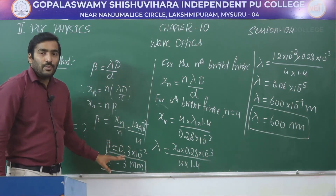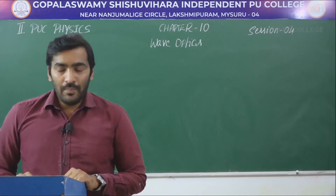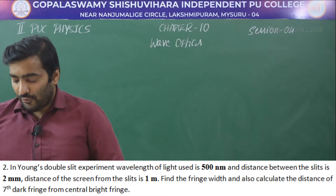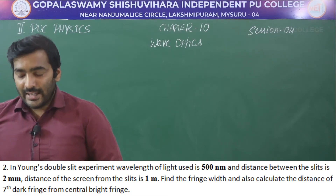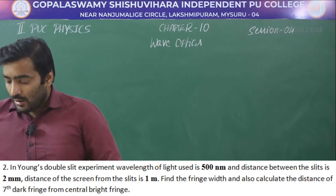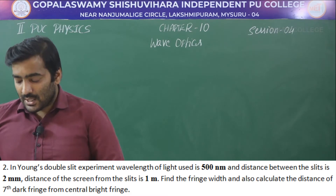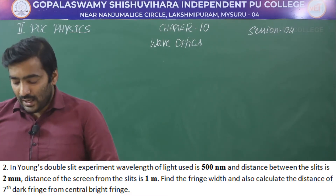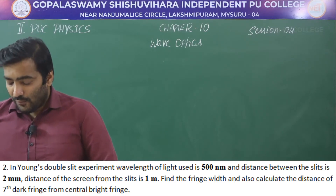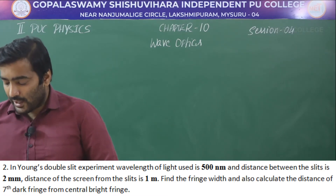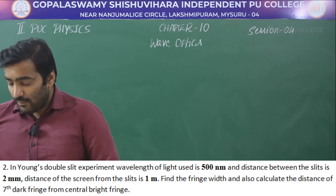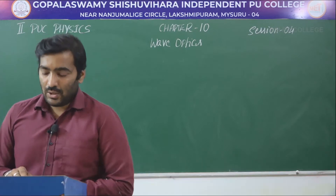We will move on to the next problem. In Young's double slit experiment, wavelength of light used is 500 nanometer and the distance between the slits is 2 millimeter, and the distance of the screen from the slits is 1 meter. Find the fringe width and calculate the distance of the 7th dark fringe from the central bright fringe.